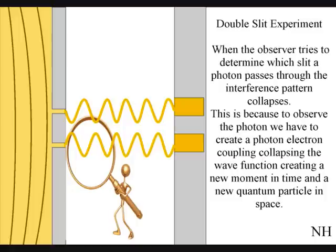Because to observe the photon, we have to create a photon-electron coupling, collapsing each wave-front into a new quantum particle that will have its own position in space and time.